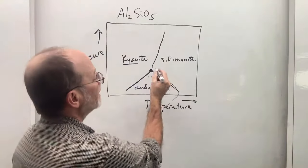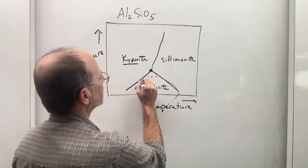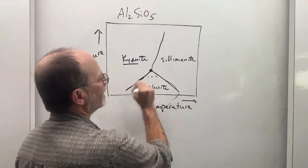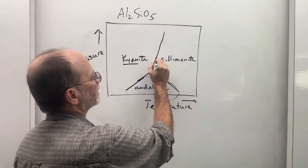Now, along any one of these boundaries, two of the aluminous silicates could coexist. So you could have, for example, andalusite and kyanite here, sillimanite and andalusite along here, kyanite and sillimanite along here.